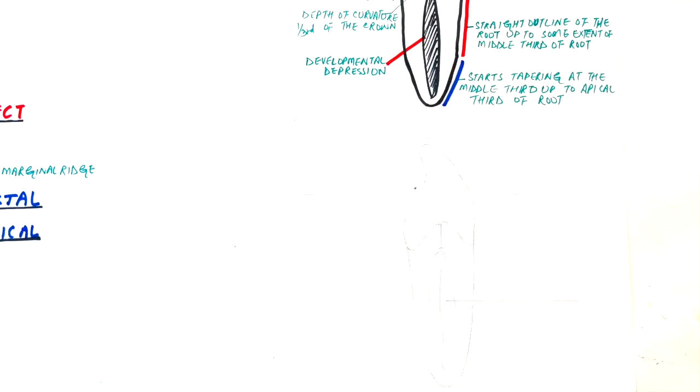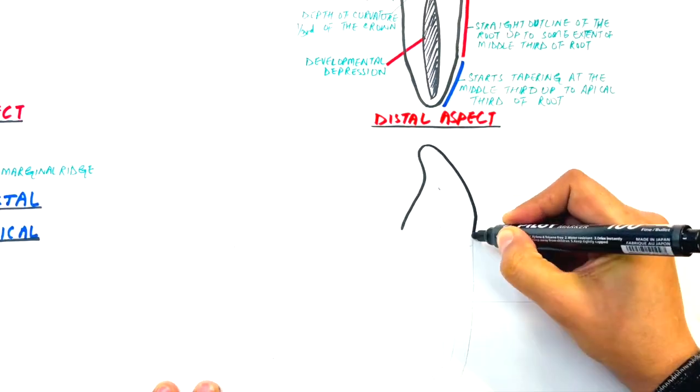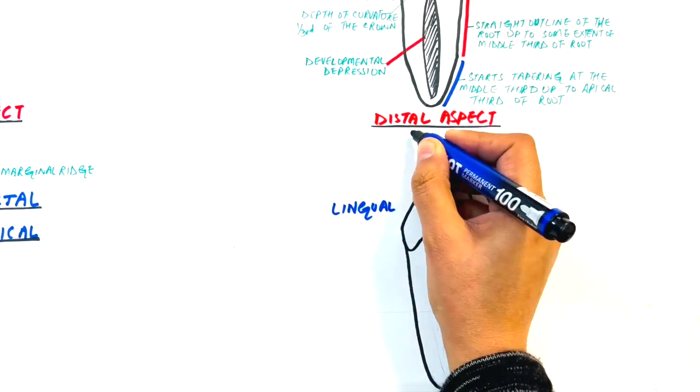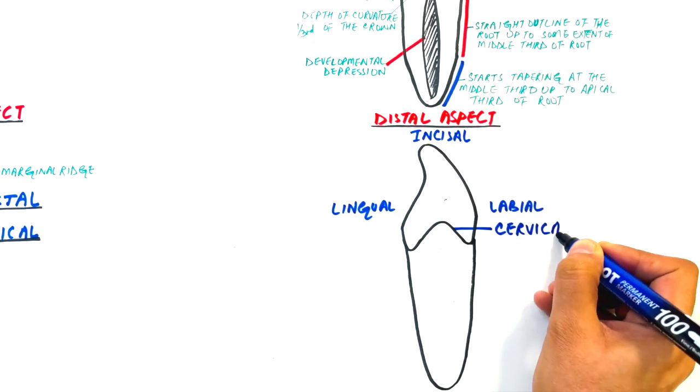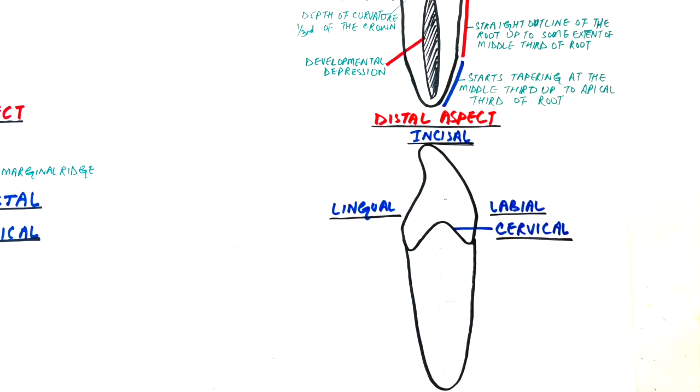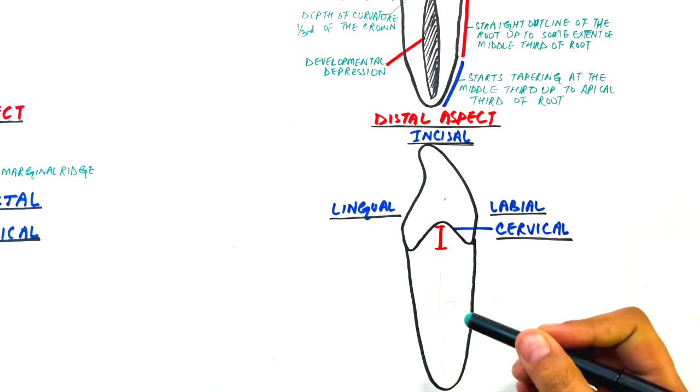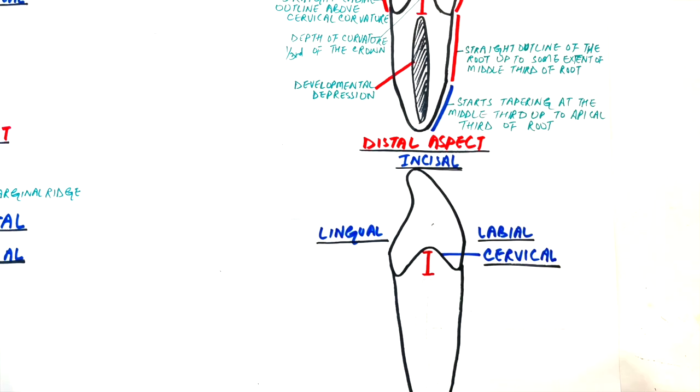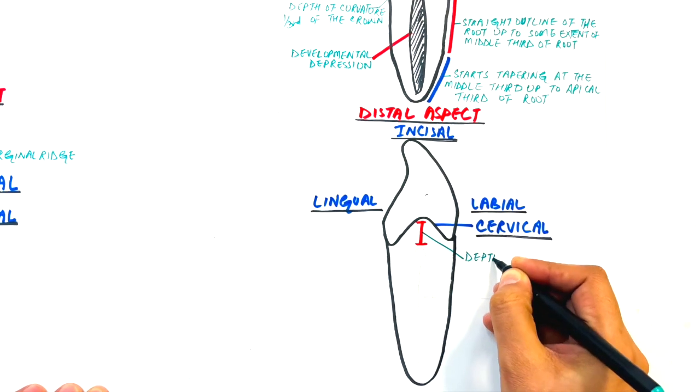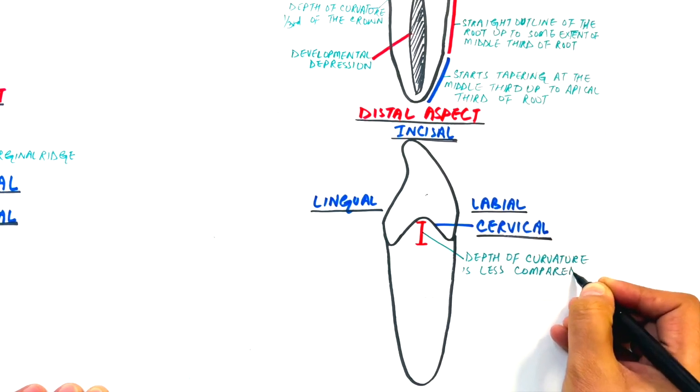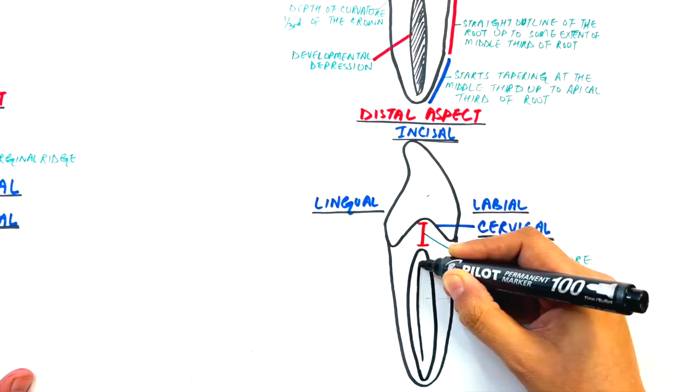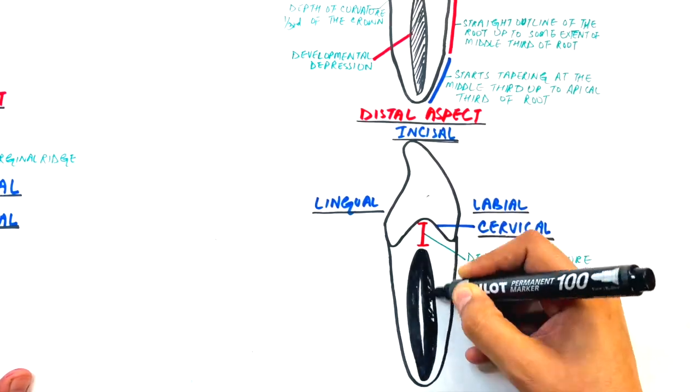The distal aspect of the root is similar to the mesial aspect except for a few points. The cervical line curves incisally slightly less on the distal aspect than on the mesial aspect. The depth of curvature at the distal aspect is slightly less than that of the mesial surface. The developmental depression on the distal surface of the root is more marked with a deeper, more well-defined developmental groove at its center.